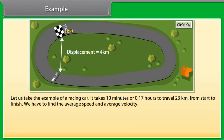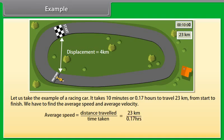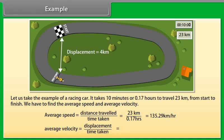Example: A racing car takes 10 minutes (0.17 hours) to travel 23 kilometers from start to finish. We have to find the average speed and average velocity. Average speed = distance / time = 23 km / 0.17 hours = 135.29 km/h. Similarly, average velocity = displacement / time. We can see in the picture that displacement is 4 kilometers. Therefore, average velocity = 4 km / 0.17 hours = 23.53 km/h.